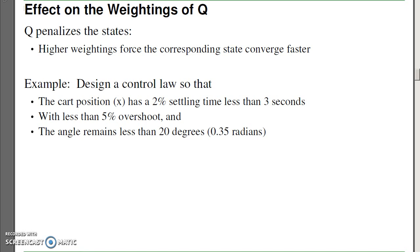The effects of weighting Q. Q penalizes the states. Higher weightings means that state's more expensive. I want to drive it to zero or drive it to steady state as quick as possible. With that, with varying Q and varying R, I can tune the control law to meet my specifications.